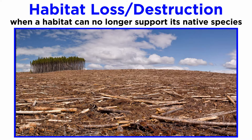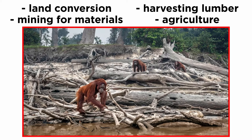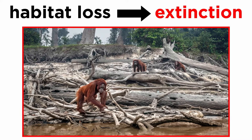Habitat loss or destruction is the process by which a natural habitat becomes incapable of supporting its native species. The organisms that previously inhabited the area are displaced or dead, leading to a reduction in biodiversity and species abundance. While there are many causes of habitat loss, land conversion for development due to growing populations, along with mining for materials, harvesting lumber, and agriculture are at the top of the list. Loss of habitat can lead to the extinction of plants and animals.